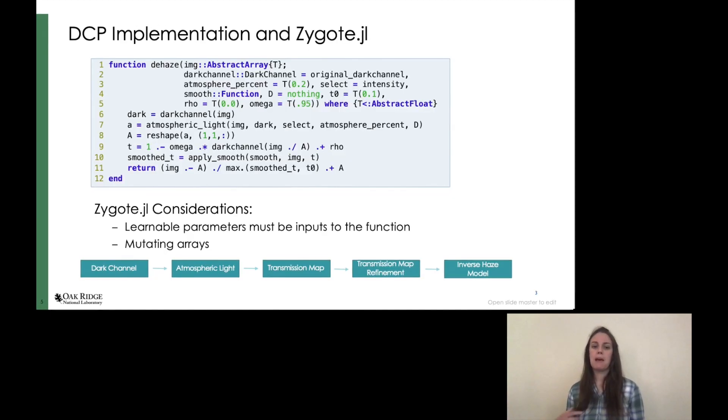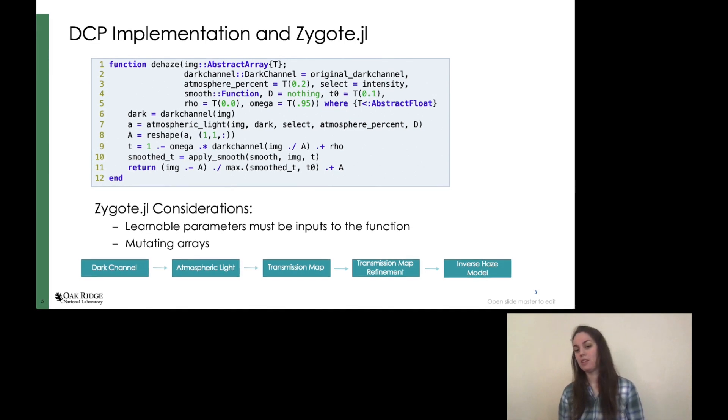So we begin by implementing the dark channel prior method in Julia. Overall, we didn't really need to be aware that we were going to apply differentiable programming to the algorithm. We only needed to know that with Zygote, learnable parameters must be inputs to functions. So as you can see here, our dehaze function has quite a few inputs. And Zygote does not easily differentiate functions that mutate arrays. You either need to not differentiate those functions or use a buffer. But in general, we could just develop it as usual and then apply differentiable programming later.